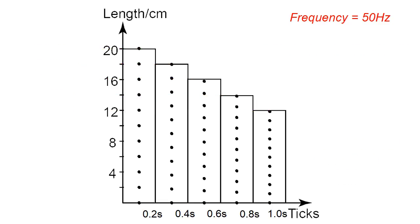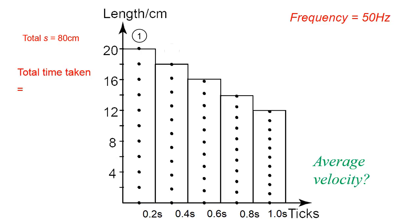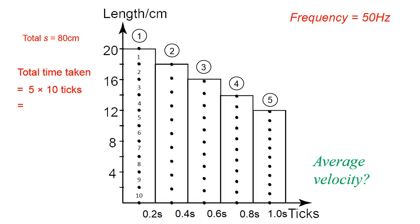Next, what is the average velocity of this ticker tape? We already know that the total displacement is 80 cm. Now all we need to know is the total time taken. There are five 10-tick strips, and each 10-tick strip has 10 ticks. So we take 5 times 10 ticks, and each 10 ticks is 0.2 seconds — that equals 5 times 0.2 seconds, giving a total time taken of 1.0 seconds.